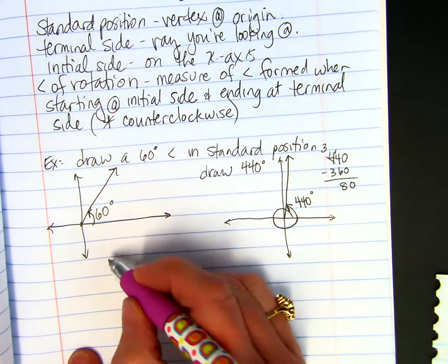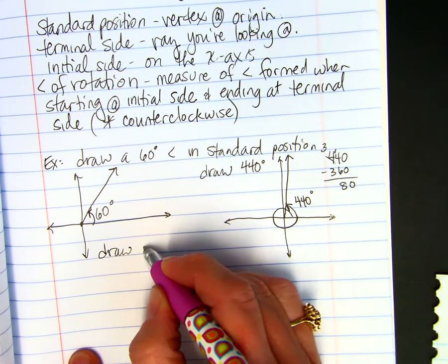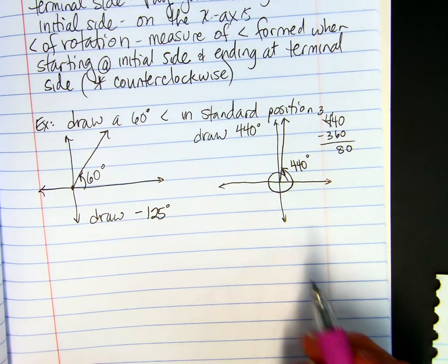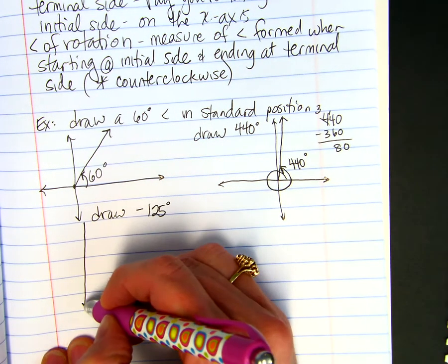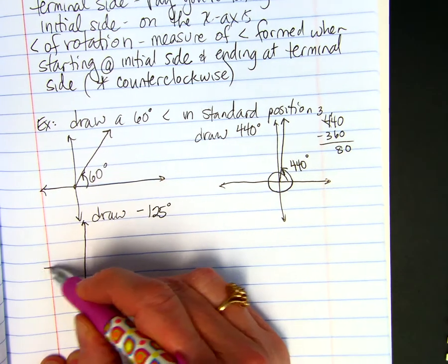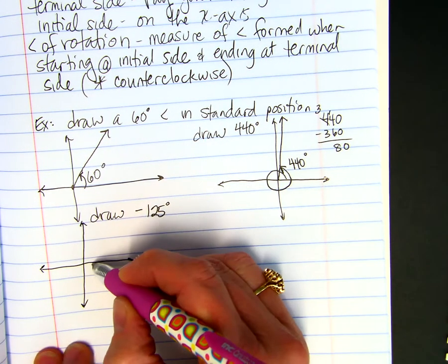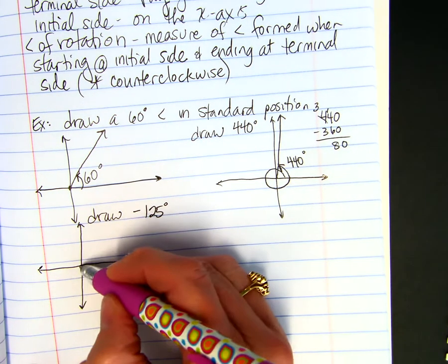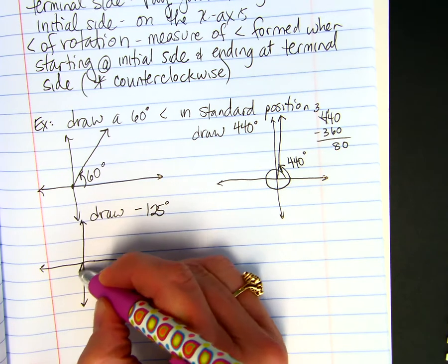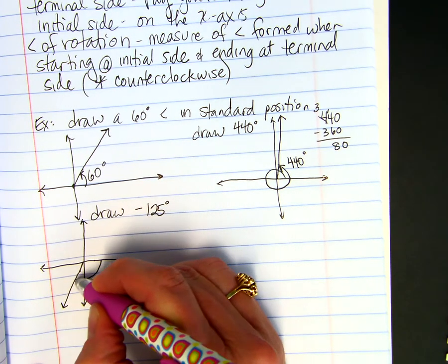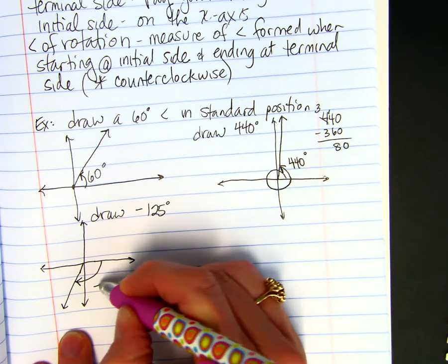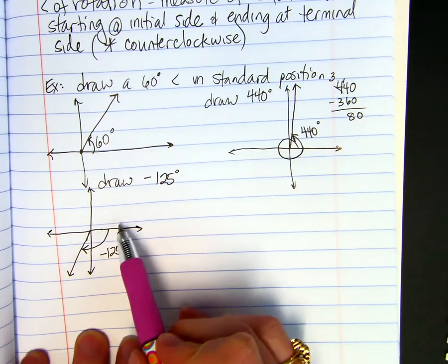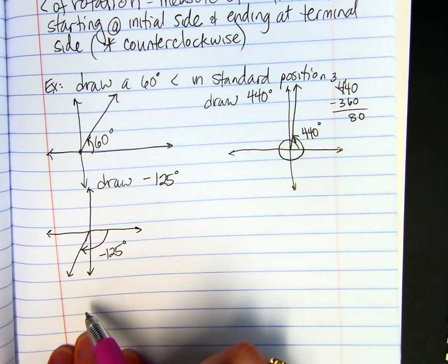And then what if I want to draw negative 125 degrees? So 125 minus 90 is 35. So I go this way. Now I'm going to go clockwise, 125 degrees. And this would be negative 125 degrees. And it would also be a positive whatever 360 minus 125 is.